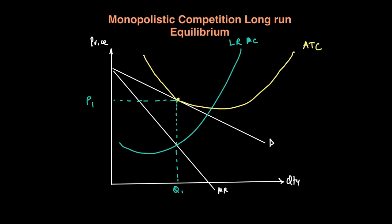The fall in demand and the fact that profits are competed away to zero means no new firms will enter once every firm is making normal profit. This is where monopolistic competition is very similar to perfect competition. In perfect competition the demand curve is horizontal, whereas here the demand curve is downward sloping. It is useful to compare these two market structures in terms of efficiency.